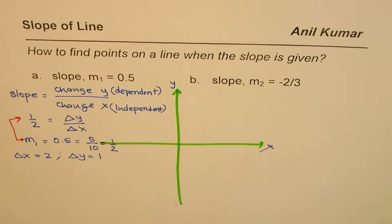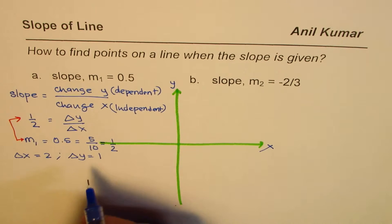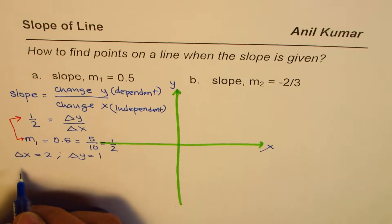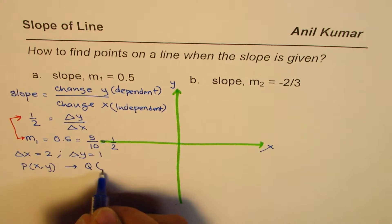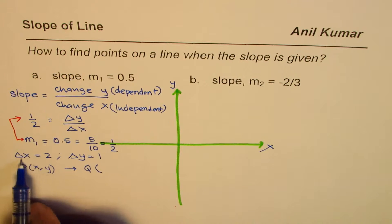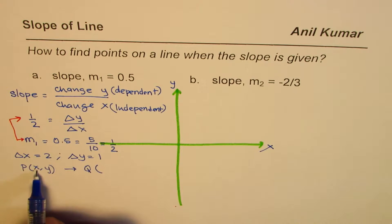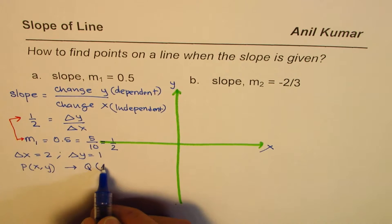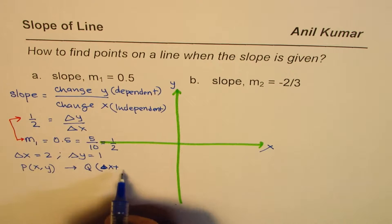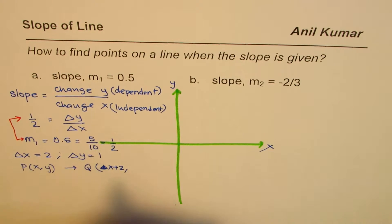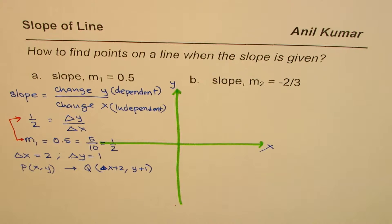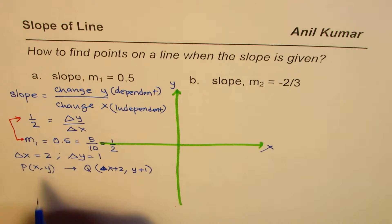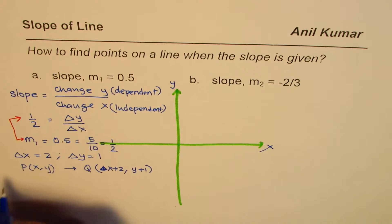It is now simpler to find any two points that give us a slope of 0.5 or one half. Let's take a general point P at coordinates (x, y). Then point Q should be such that the change in x is 2, so we add 2 to get x plus 2, and the change in y is 1, so we get y plus 1. Joining these two points, the slope of the line should always be one half.